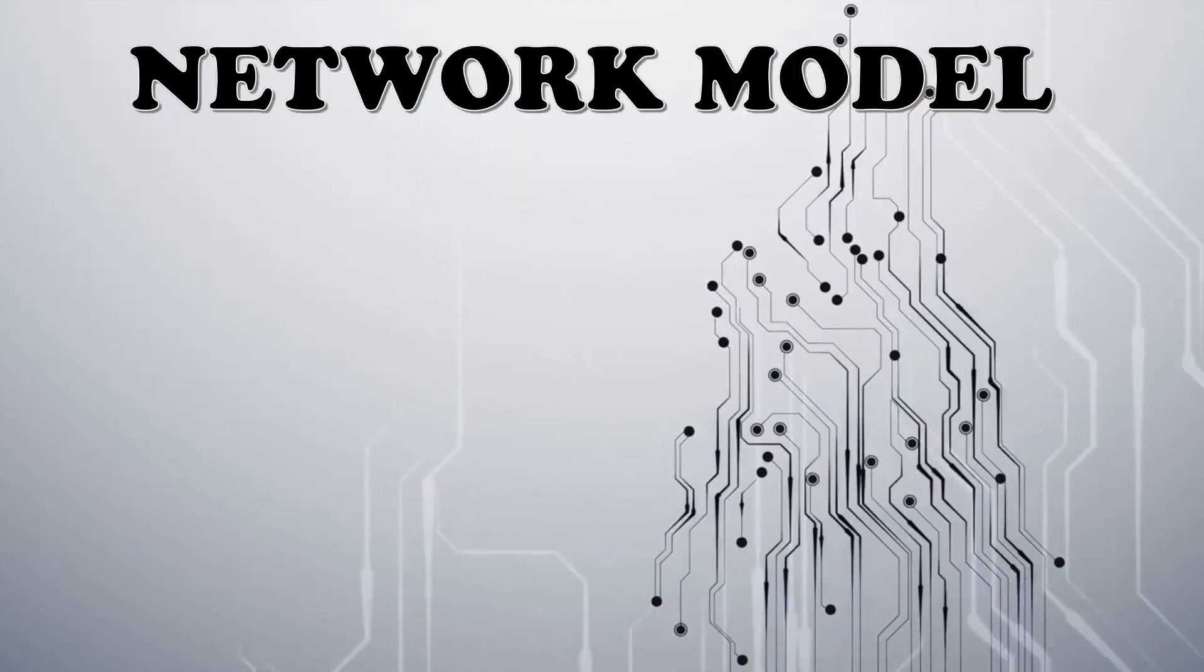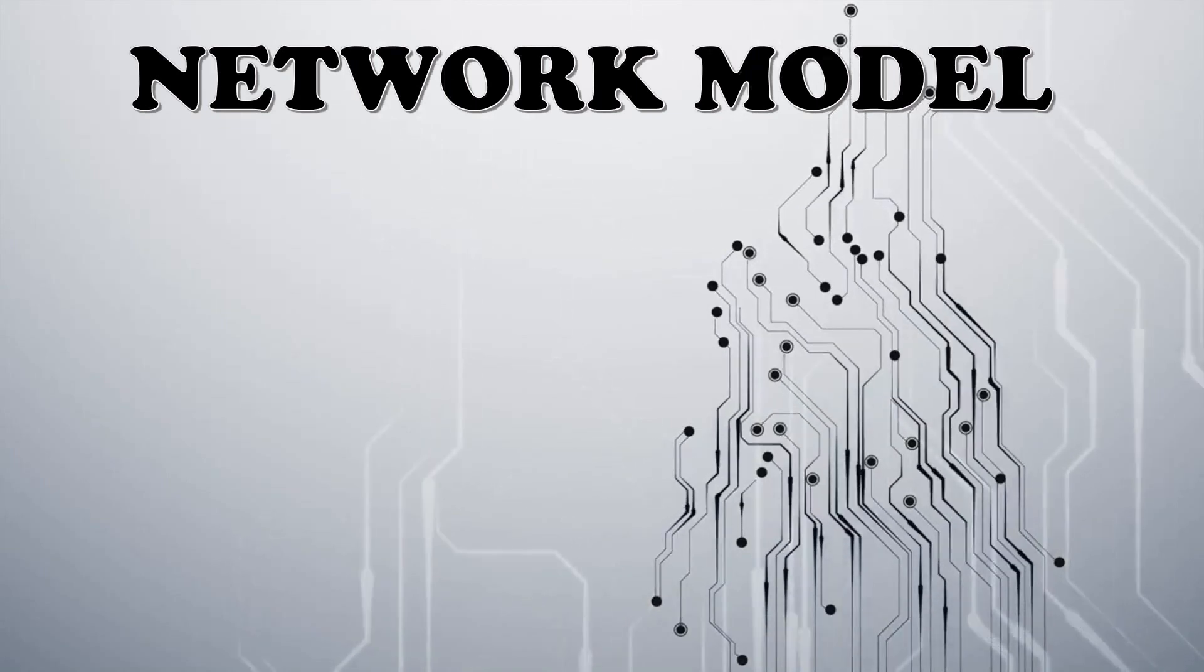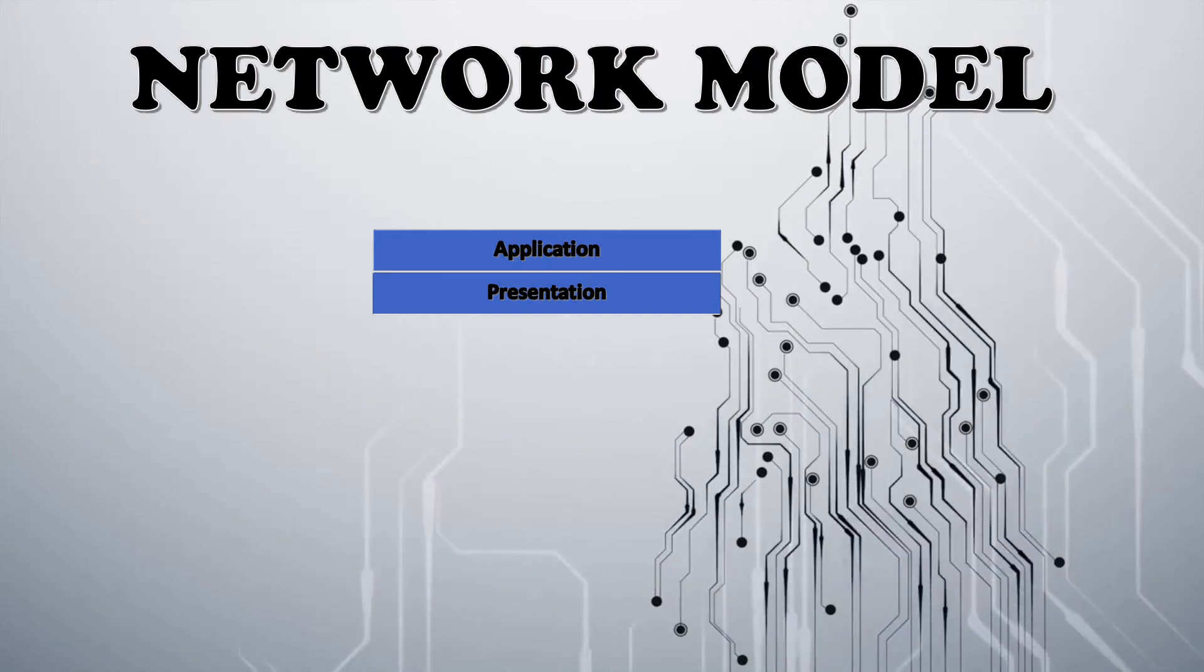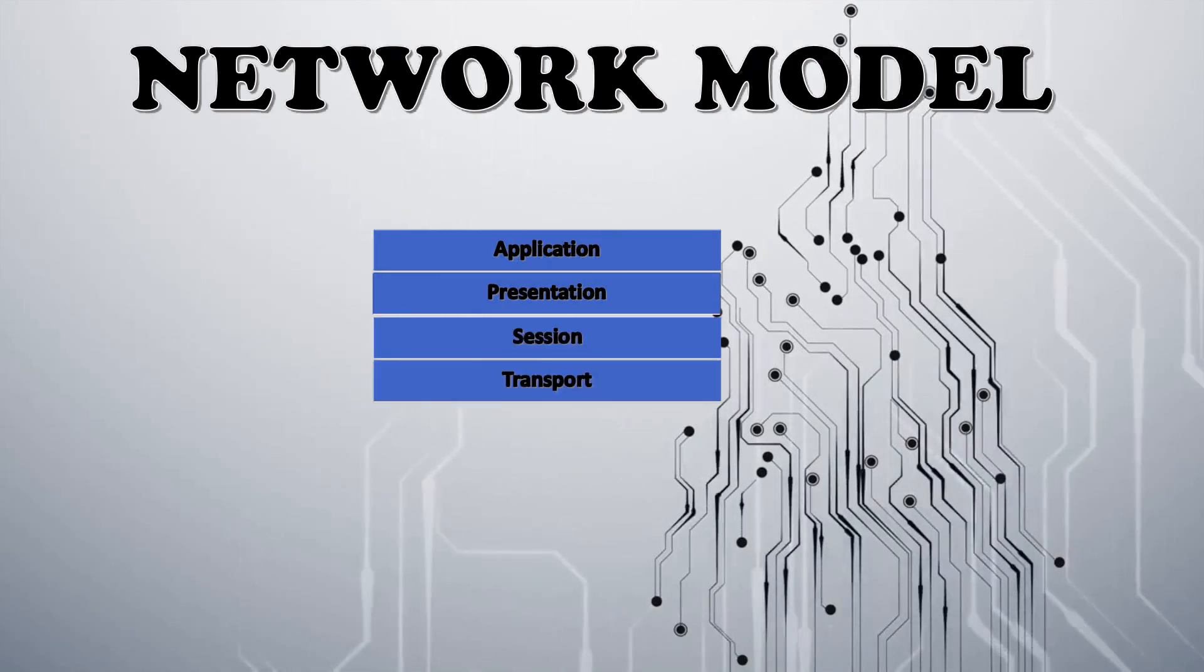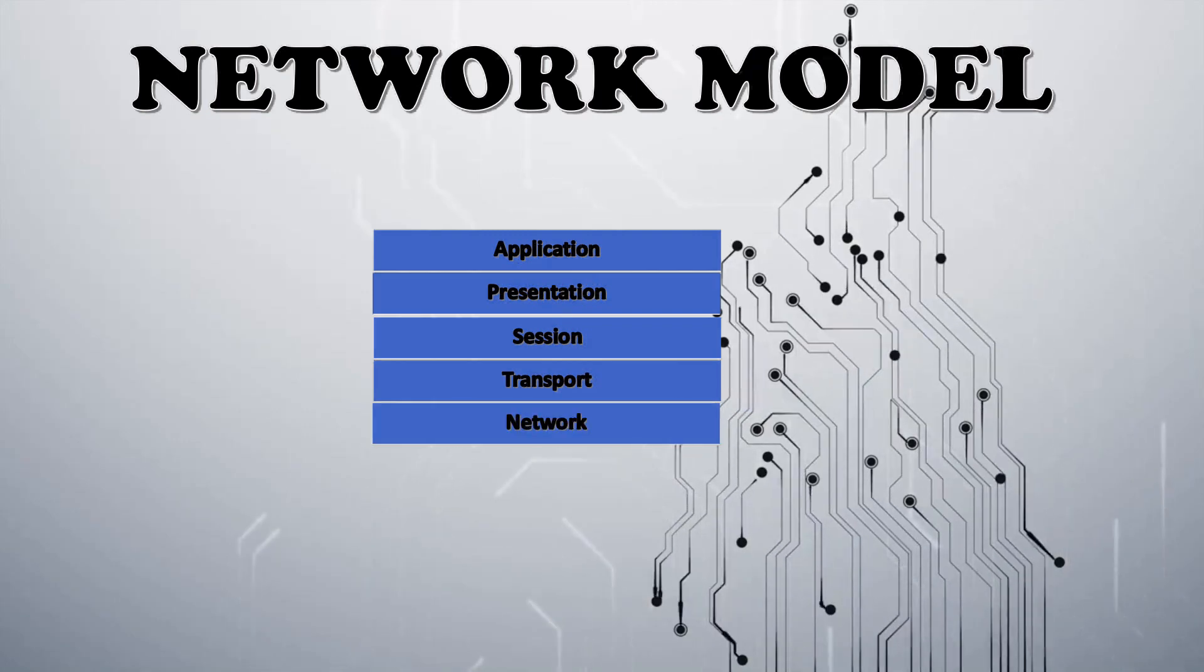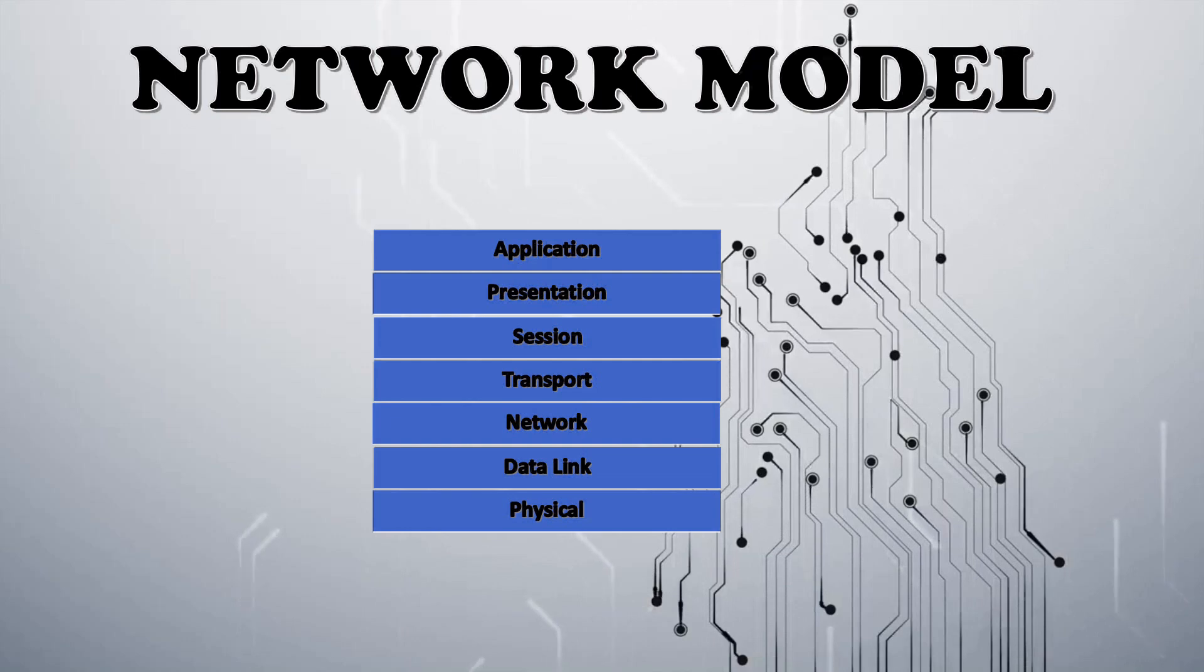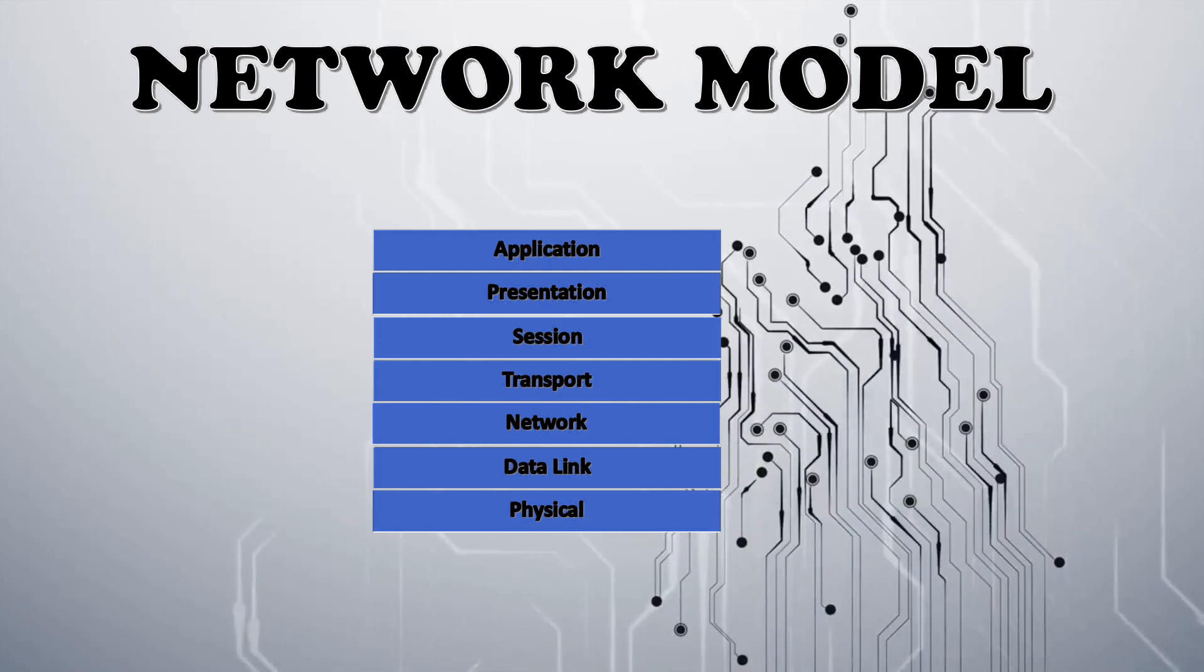You will see the network model. We know ISO OSI network layers: application, presentation, session, transport, network, data link and physical. So these are the 7 network layers.